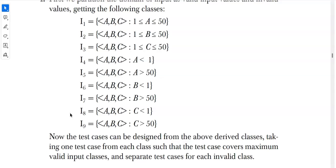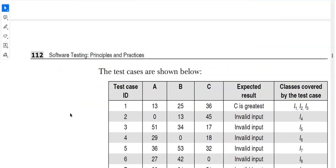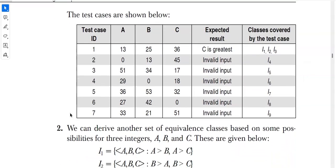Once we have defined the test classes, we will write the test cases. The table has columns: test case ID, a, b, c, expected result, and classes covered by the test case. For test case ID 1, we have randomly chosen the numbers 13, 25, 36 — in which c is the greatest.